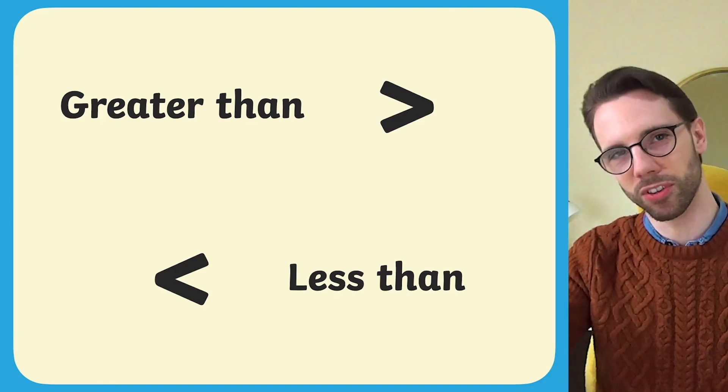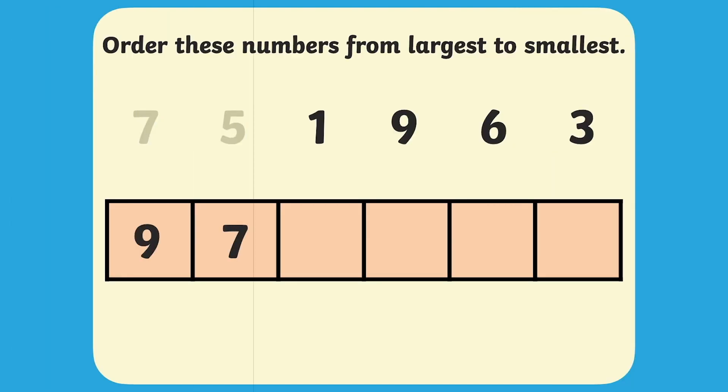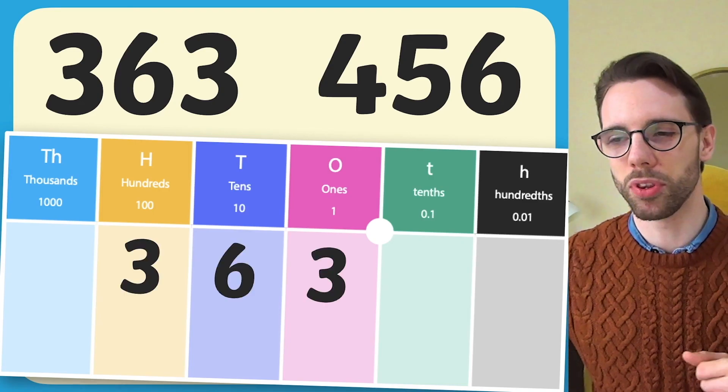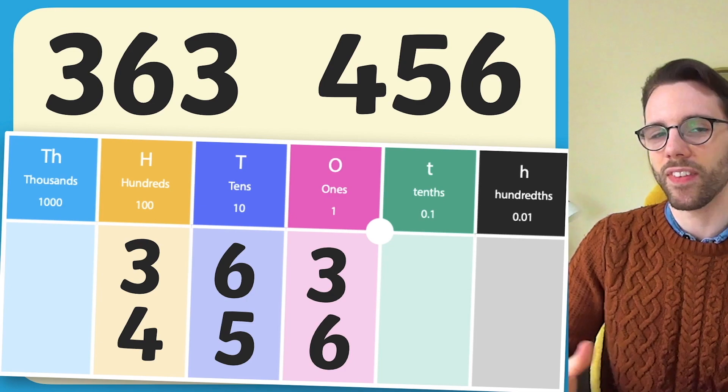He then teaches learners firstly about comparing numbers and secondly how to order them. Children are shown how they can use resources such as place value charts to support them if they're finding things tricky.